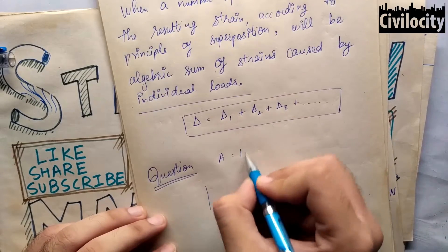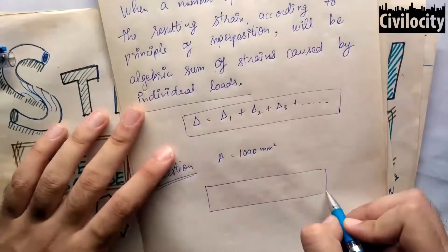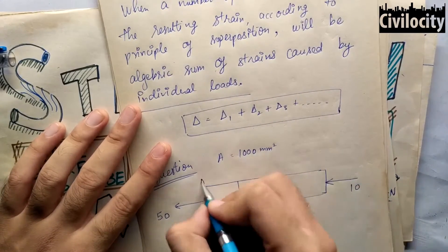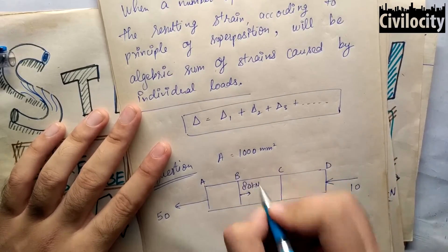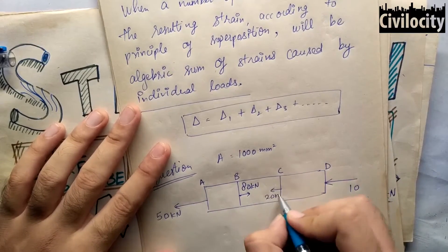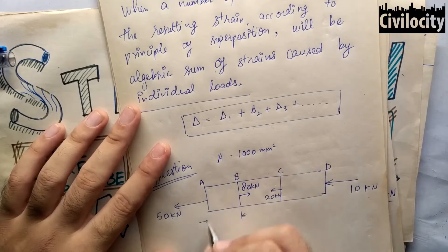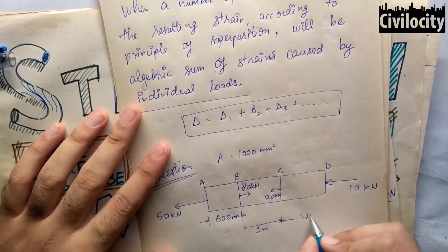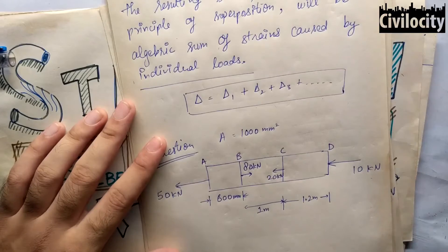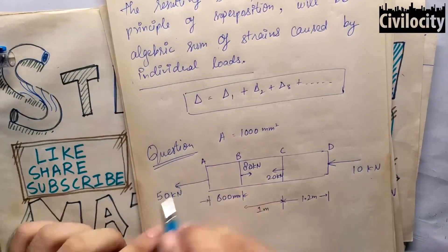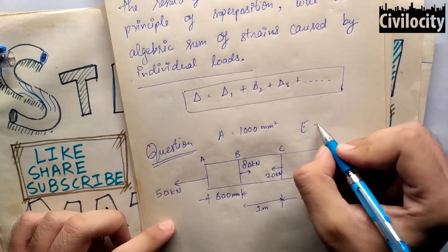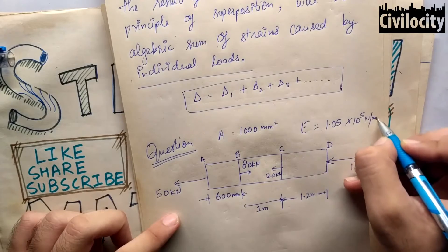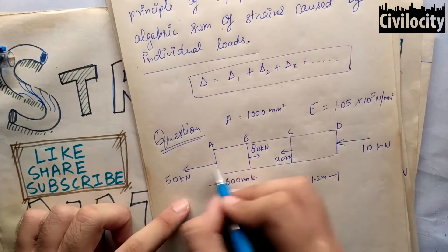Let's do a question to understand the Principle of Superposition. A bar is given with lengths of 600 mm, 1 m, and 1.2 m for its sections. We have to find out the total elongation of the bar. The end forces shown are 50 kN and 10 kN. We will work with internal forces to keep calculations easy. The value of Young's modulus is 1.05 into 10 raised to the power 5 N/mm².